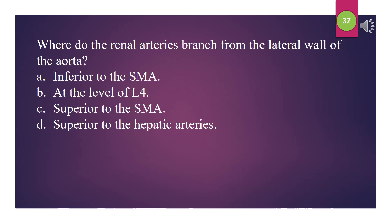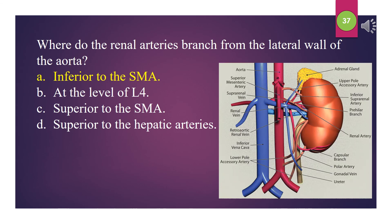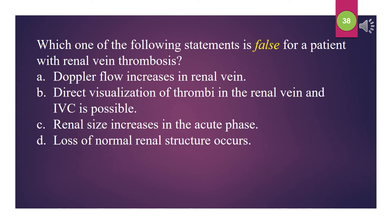Where do the renal arteries branch from the lateral wall of the aorta? A. Inferior to the SMA. B. At the level of L4. C. Superior to the SMA. D. Superior to the hepatic arteries. The answer is A: Inferior to the SMA. Which one of the following statements is false for a patient with renal vein thrombosis? A. Doppler flow increases in renal vein. B. Direct visualization of thrombi in the renal vein and IVC is possible. C. Renal size increases in the acute phase. D. Loss of normal renal structure occurs. The answer is A: Doppler flow increases in renal vein.